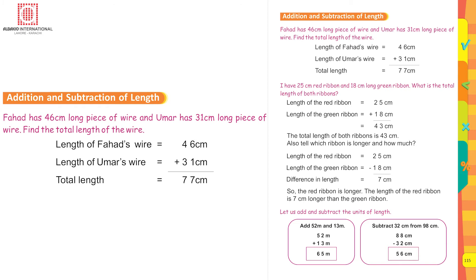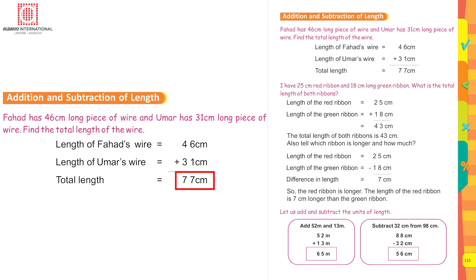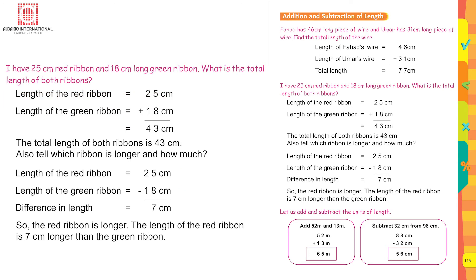Addition and subtraction of length: Fahad has a 46 cm piece of wire and Umar has a 31 cm piece of wire. Adding them: 6 plus 1 is 7, and 4 plus 3 is 7, giving 77 centimeters. Always write the unit with the number. For another example: a 25 cm red ribbon plus an 18 cm green ribbon — 8 plus 5 is 13, write 3 carry 1, giving a total of 43 centimeters.